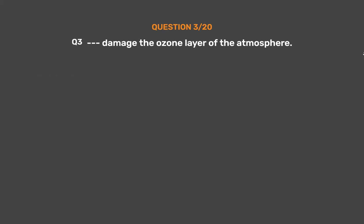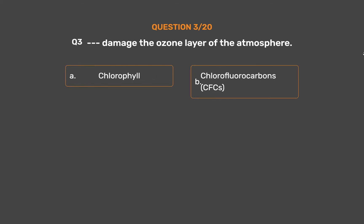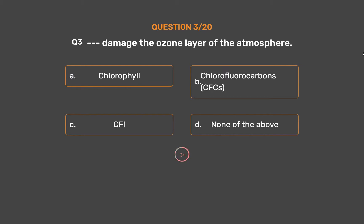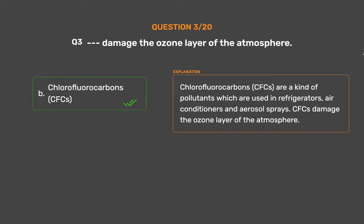Question number 3: What damages the ozone layer of the atmosphere? Option A: Chlorophyll. Option B: Chlorofluorocarbons (CFCs). Option C: [other]. The correct answer is Option B: Chlorofluorocarbons (CFCs). CFCs are a kind of pollutants which are used in refrigerators, air conditioners and aerosol sprays. CFCs damage the ozone layer of the atmosphere.